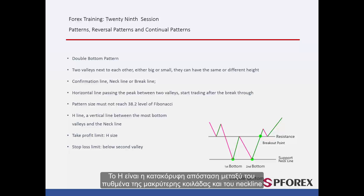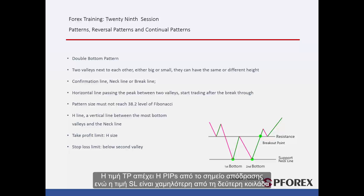H is the vertical distance between the bottom of the longest valley and the neckline. TP price is H pips away from the breakout point, while SL price is lower than the second valley.